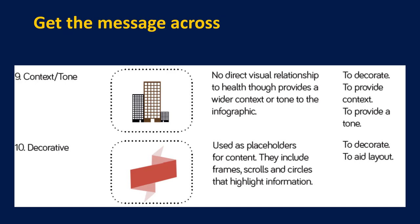One that works very well is context tone. There's no direct visual relationship to health, but it does provide information relating to the tone of the poster. You might be using it to demonstrate population, or number of people living in blocks of flats, or to show scale within your infographic. Before I show you some examples, be very careful when using images about using things like graphs. The general public much prefer either icon images or text.